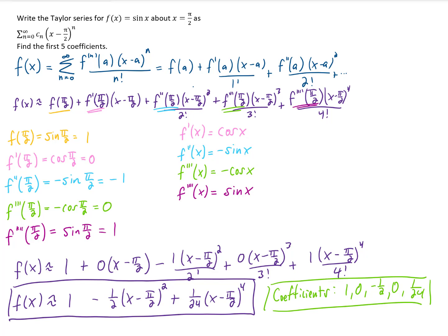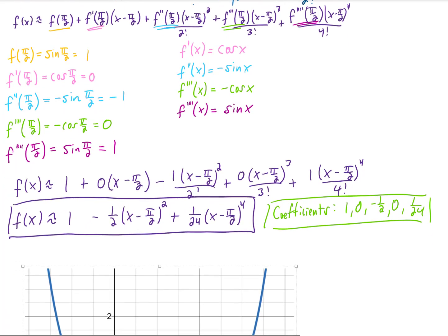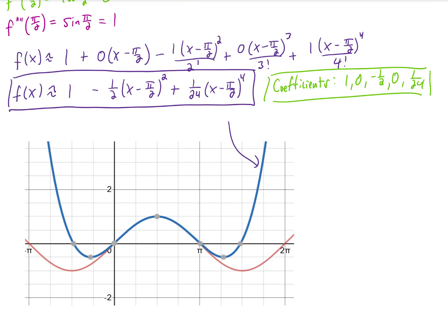The last thing that I might do, just because it's really cool, is show you a graph of what this function looks like. Our Taylor series approximation is this blue graph right here. This red graph is the sine of x. And you can see what's happening.